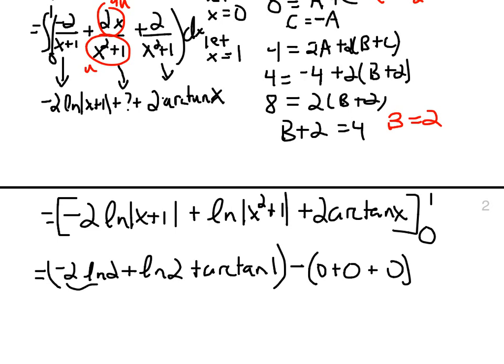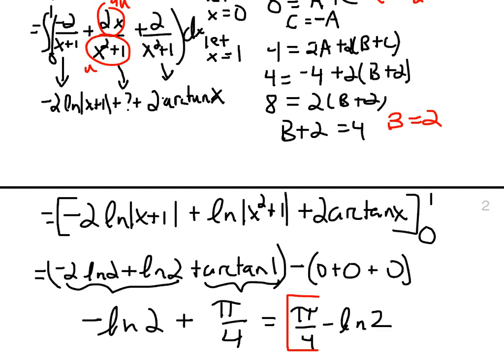Negative 2 natural log of 2 plus the natural log of 2, those can combine. Like negative 2x plus 2x is negative x. So, we have negative the natural log of 2. And the arc tangent of 1, what angle, when you plug it into tangent, do you get a 1 out? The angle has to be between minus pi over 2 and pi over 2. That's our friend, pi over 4. The answer to the question is pi over 4 minus the natural log of 2. Good.